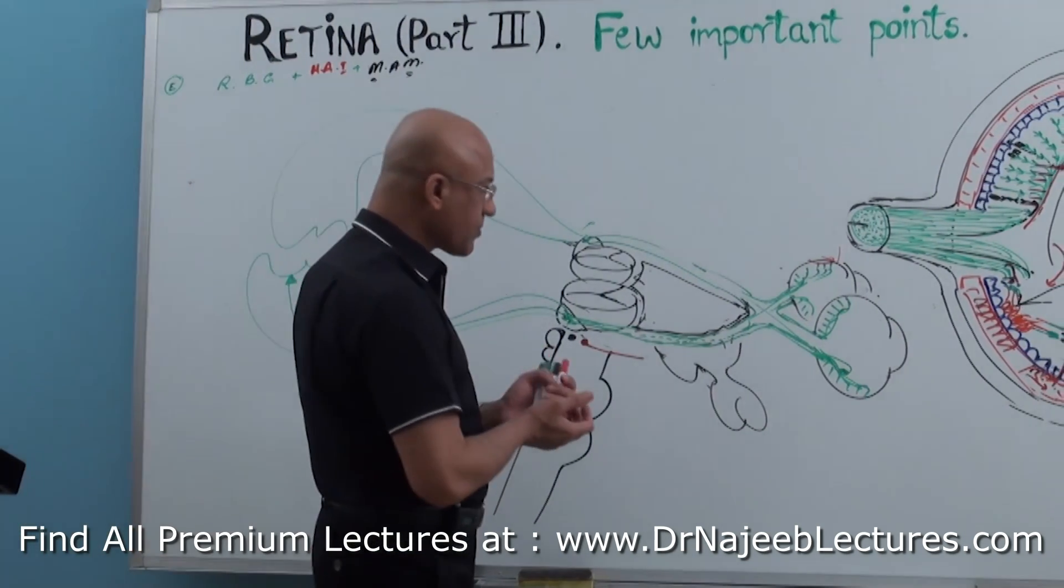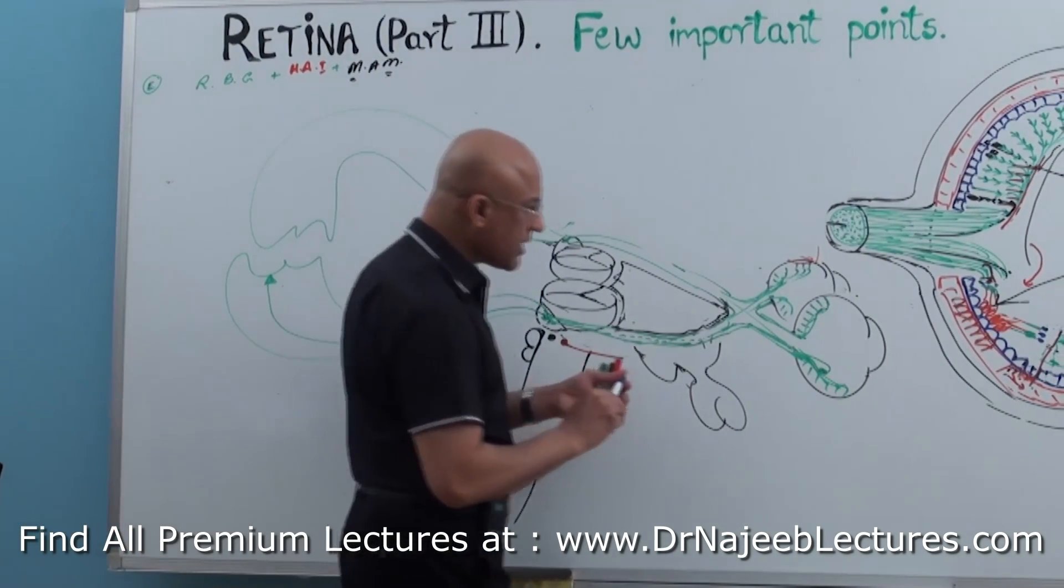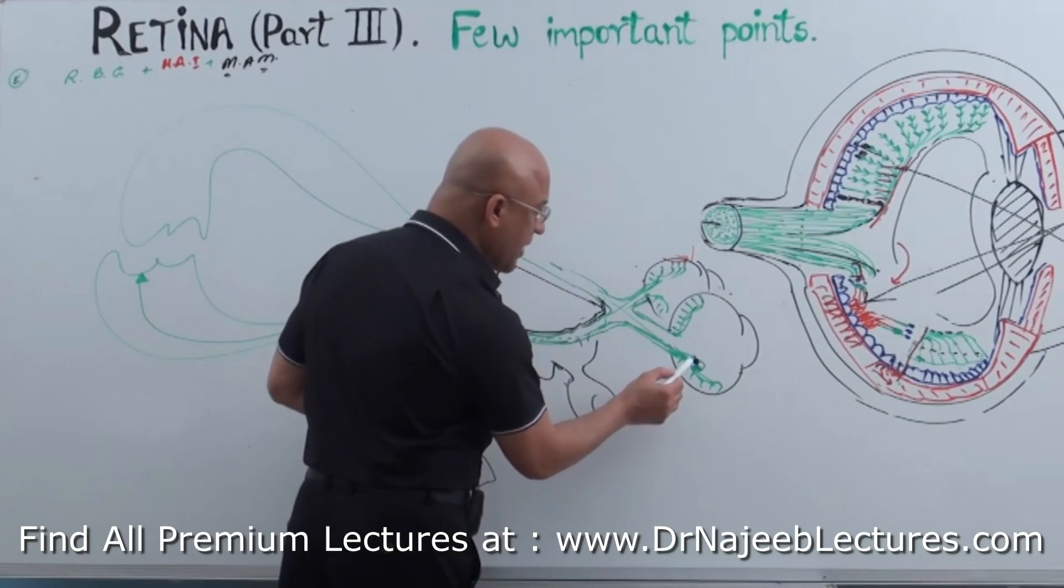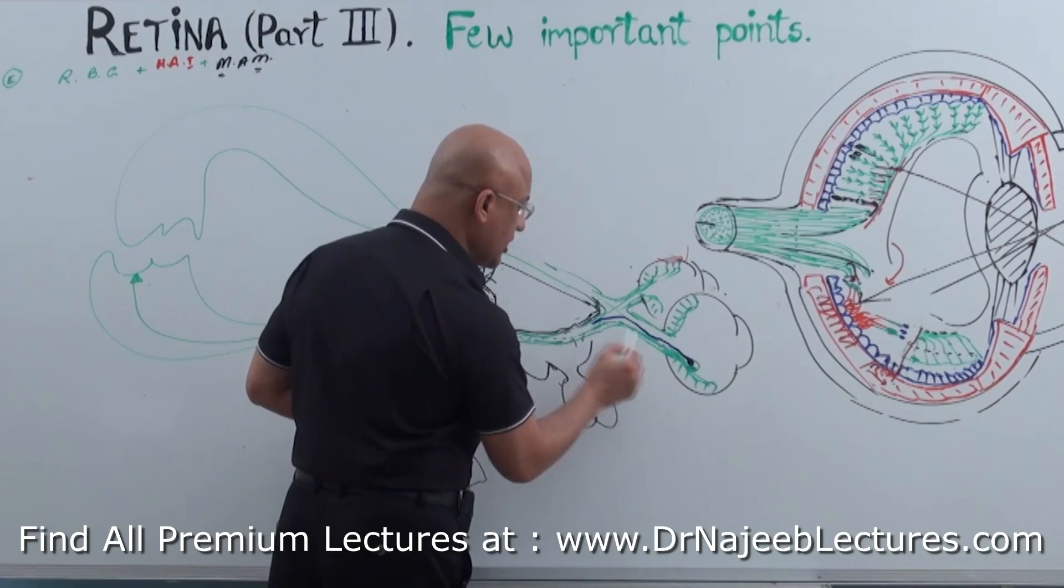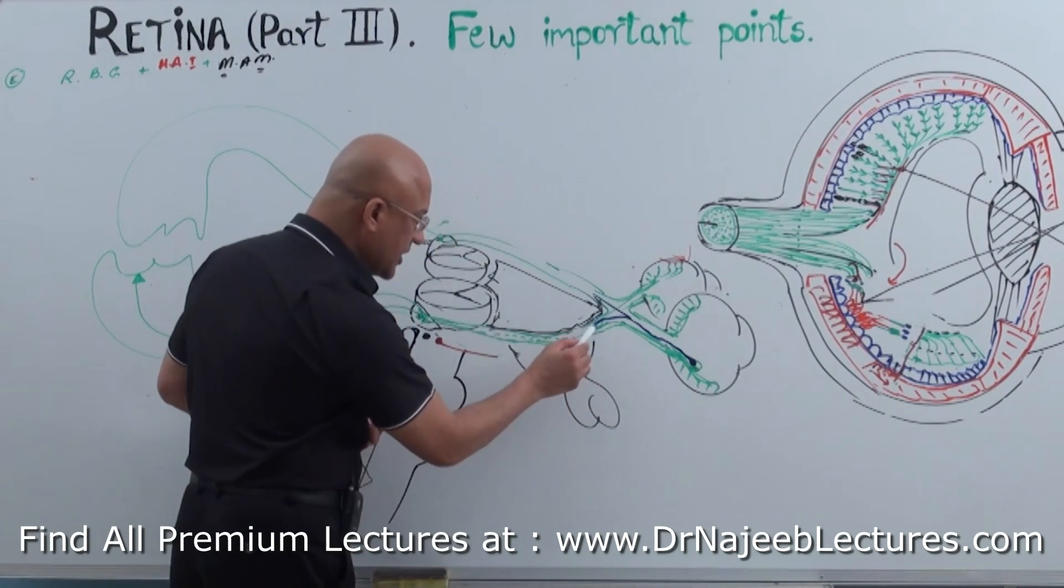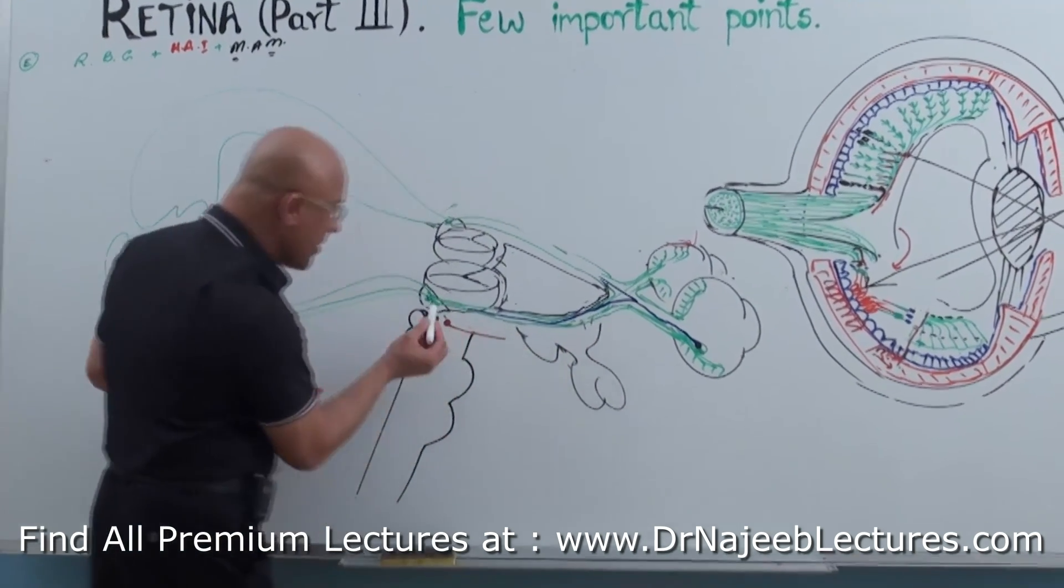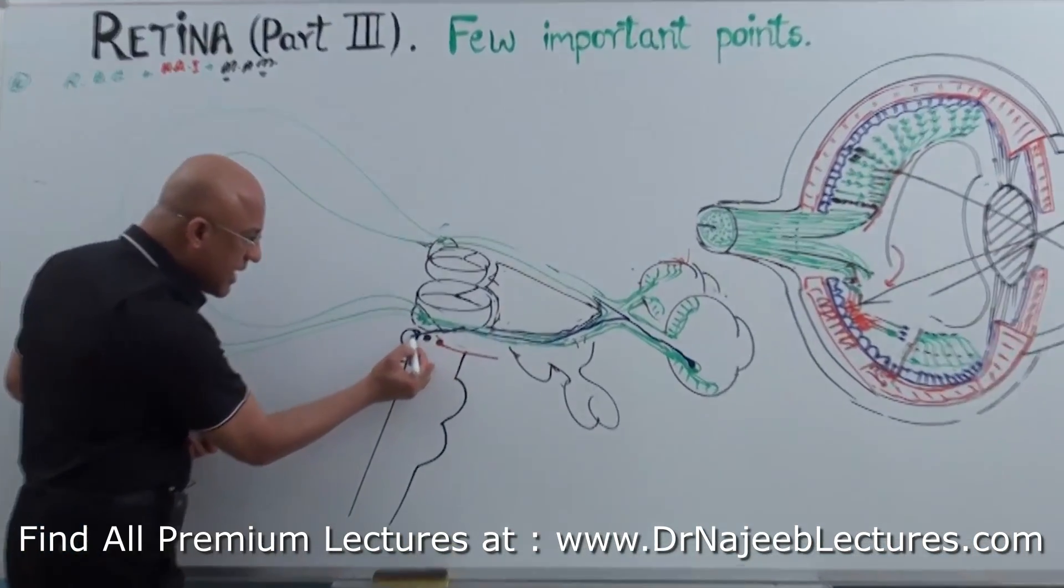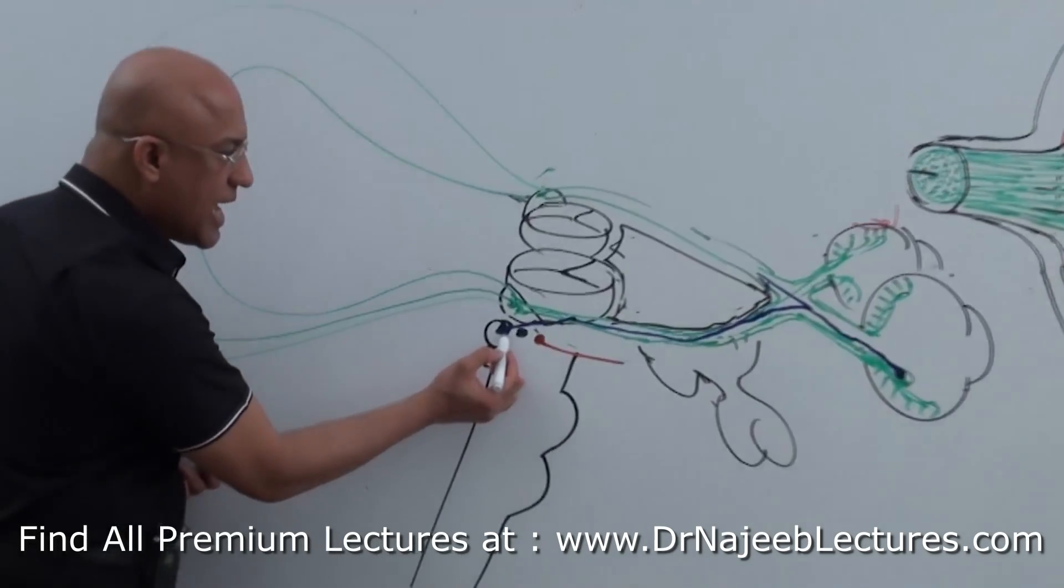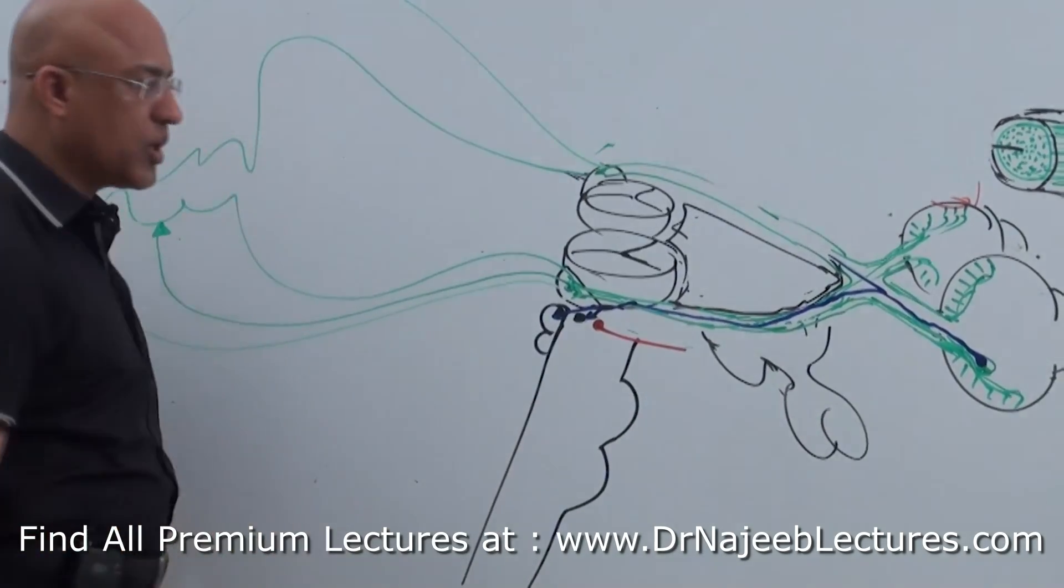But there are other pathways also. Let me make the other pathway with green. Some of the fibers from here, they take information, they cross also. They take information and before reaching the lateral geniculate body, they separate.